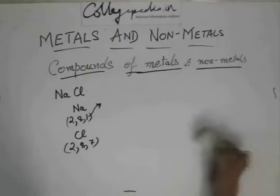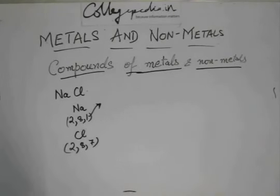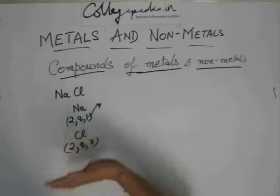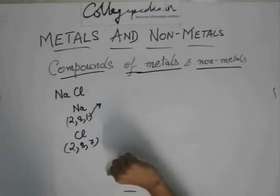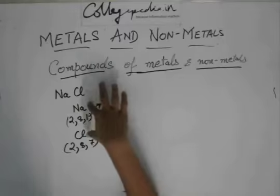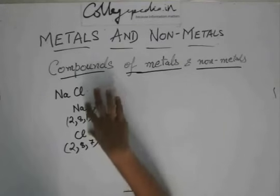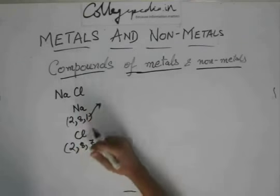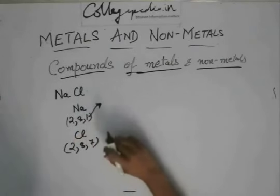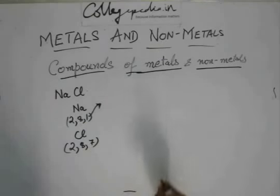So, if you notice that sodium wants to give away 1 electron and chlorine needs 1 electron. So, what these sodium and chlorine do, they strike a deal. Sodium says, I am giving this 1 electron to you so that I am also happy with 2, 8 and you are also happy with 2, 8, 8.